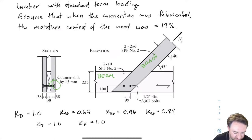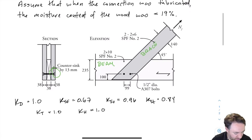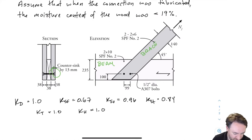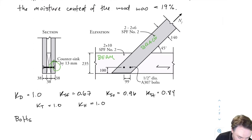Our KT equals 1.0 because we're untreated, and our KH, our system effect factor, is also 1.0 because we only have one of these connections that we're checking and there are no multiple connections sharing one kind of load.